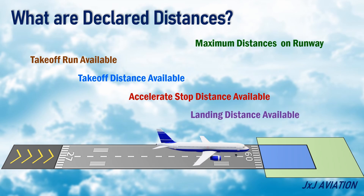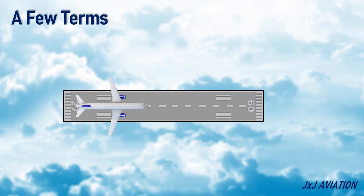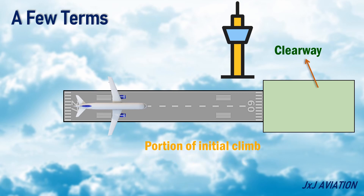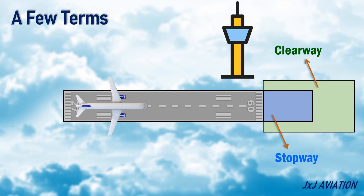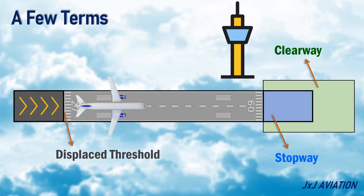Before we understand these terms, we need to look at a few other terms. Clearway: a defined rectangular area beyond the paved runway, free of obstructions, and under the control of appropriate authority. This is an area over which an aircraft may make a portion of its initial climb. Stopway: a defined rectangular area beyond the paved runway, which is used for deceleration of an aircraft in case of a reject takeoff. Displaced Threshold: a threshold located at a point on the runway other than the designated beginning of the runway. A threshold may be displaced permanently or temporarily.